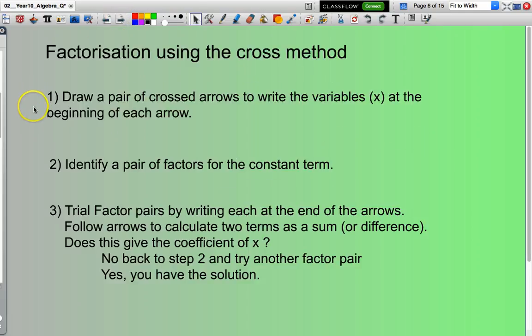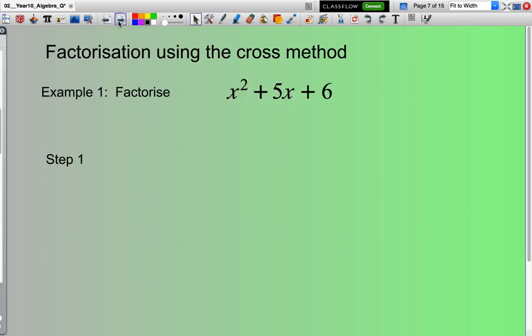Now there's a whole lot of steps to go through. If you want to read the steps just pause the video now. I'll just skip forward and probably best just to do a couple of examples. So say I want to factorize x squared plus 5x plus 6. Well my first step is I draw my cross and identify my variable, that being x.